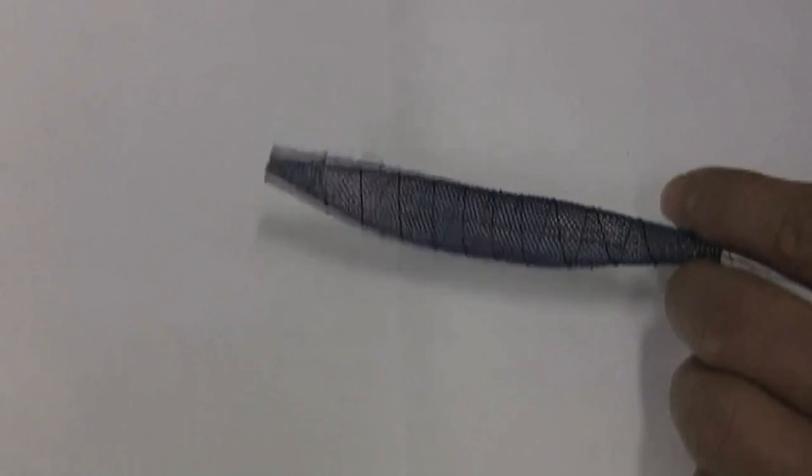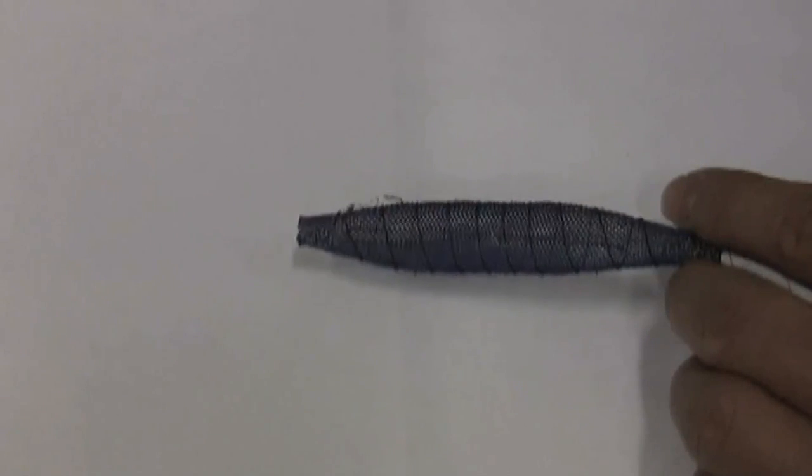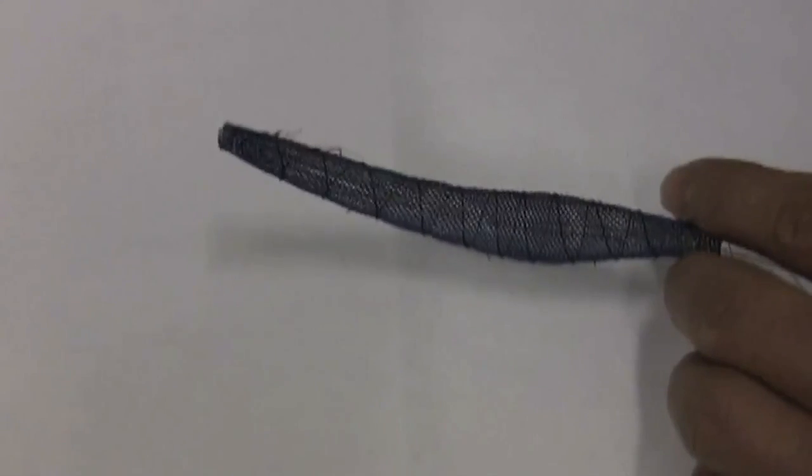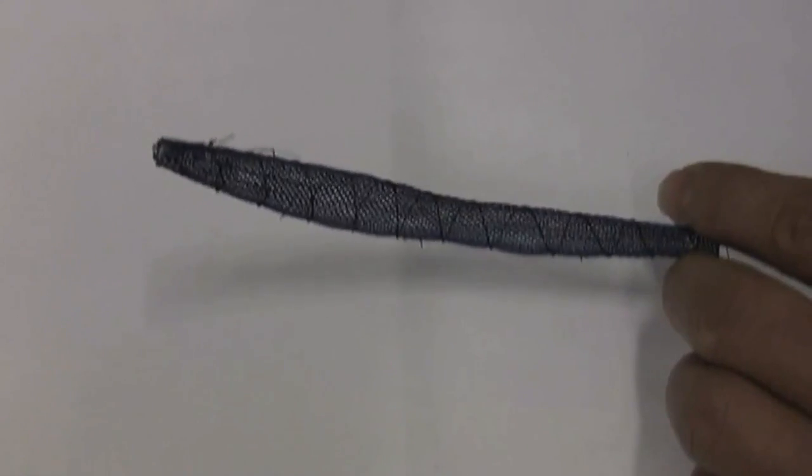They then applied a small current to the wire segments, causing the wire to contract and squeeze the mesh tube, propelling the robot forward.